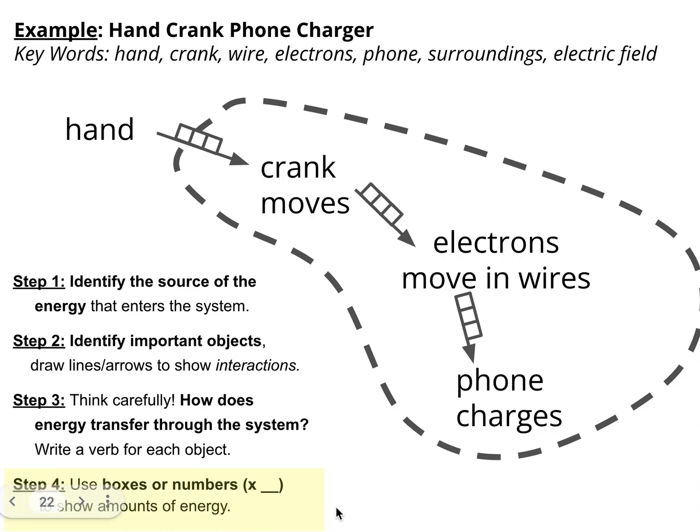Next is step four. Notice this is the last step. I'm not doing anything with boxes or numbers until I've got the rest of it figured out. And in this case, I'm saying, okay, the hand puts some energy into the crank, and then all of that energy goes to moving electrons, which goes to charging the phone. This is like, I guess, maybe technically possible, but it's not really how things happen.